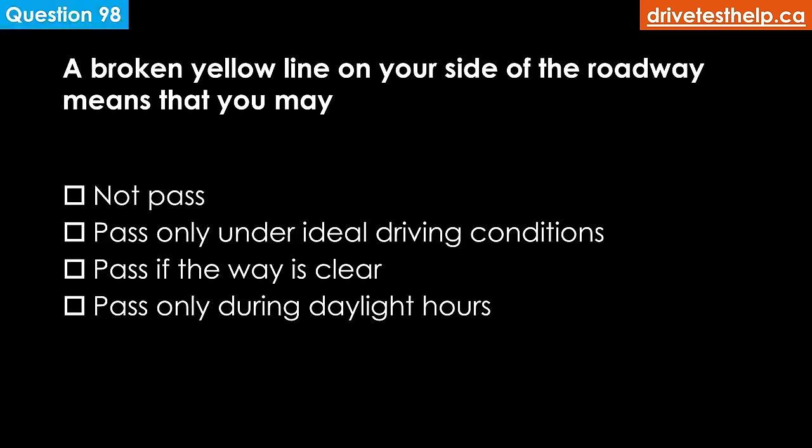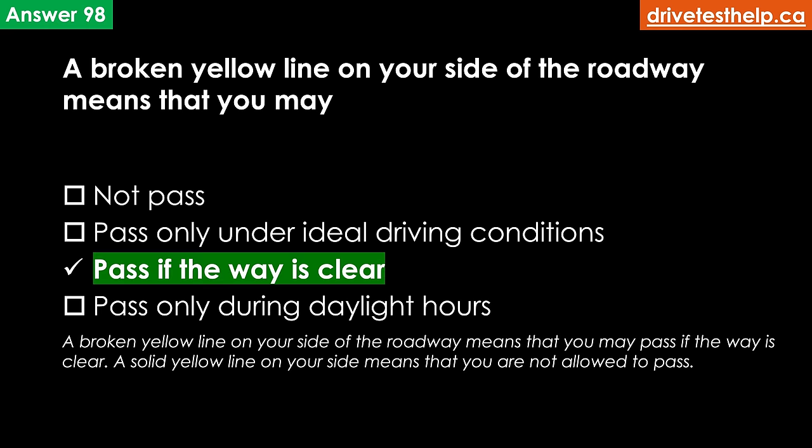A broken yellow line on your side of the roadway means that you may: not pass; pass only under ideal driving conditions; pass if the way is clear; pass only during daylight hours. The correct answer is pass if the way is clear. A broken yellow line on your side means you may pass if the way is clear. A solid yellow line on your side means you are not allowed to pass.